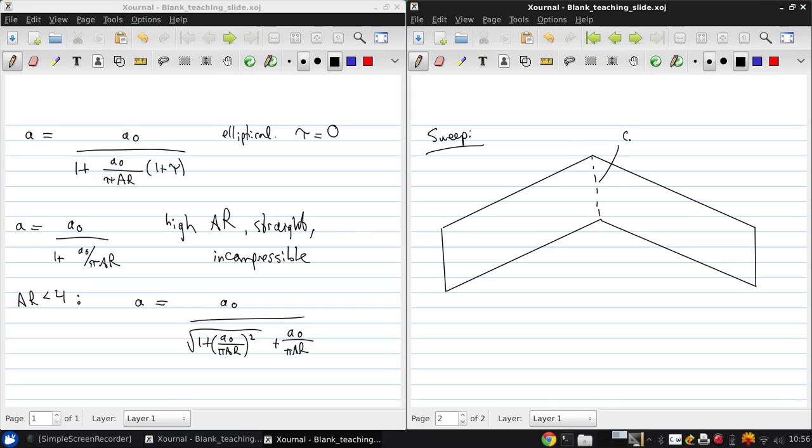So we have our root chord, the tip chord, now the mid chord line which lies at 50% chord all along the span. The angle that that makes with the perpendicular of the free stream direction is called the sweep angle lambda.